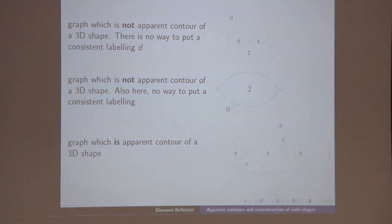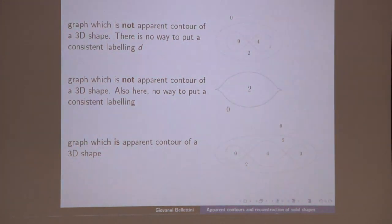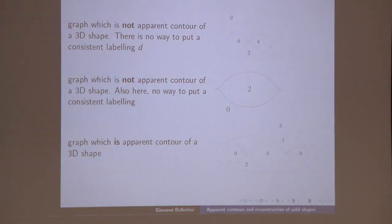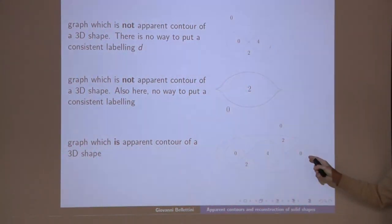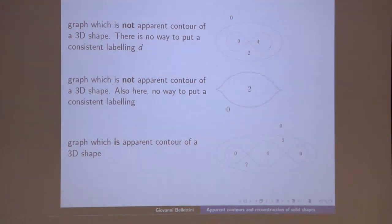Let me give examples. Consider a graph with only f labeling — it turns out it is not possible to put a compatible d on this first graph, so it cannot be an apparent contour. If you slightly modify it, adding another region with f equals zero, you can put a d there, giving hope that this comes from a three-dimensional object — and actually it does. This other configuration — resembling a carnival mask — is also impossible: no compatible d can be found.